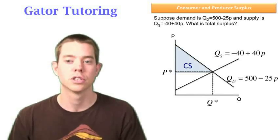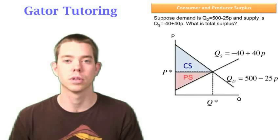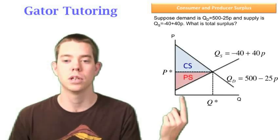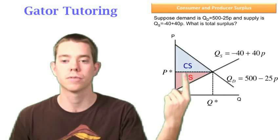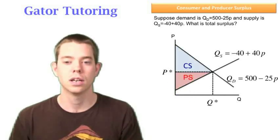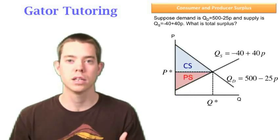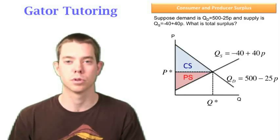Demand represents value, supply represents cost. So this red triangle is producer surplus. And again, we look at that same unit. It only cost us this much to make, but we sold it for that much. So everything below the price and above the supply curve is producer surplus.